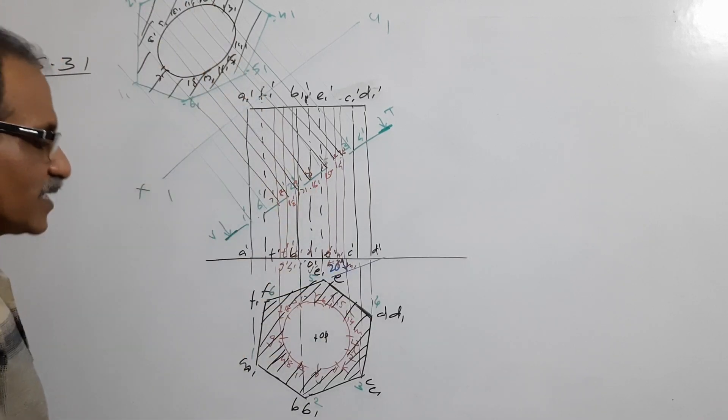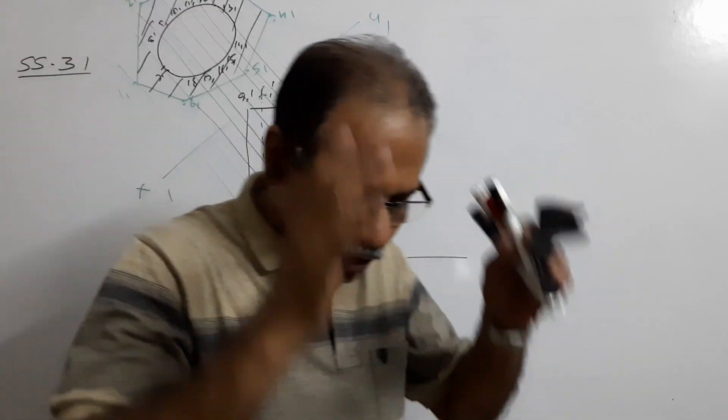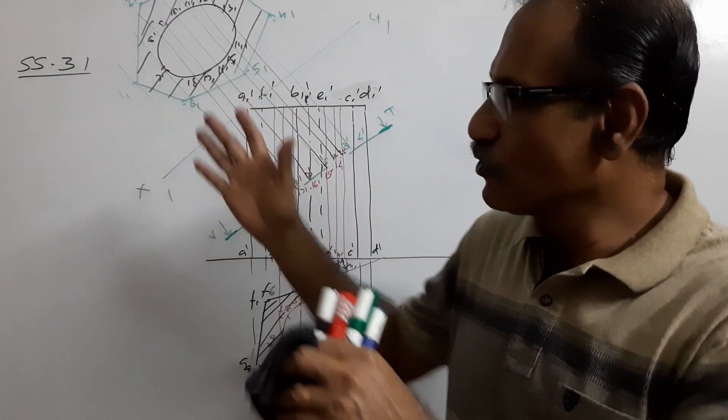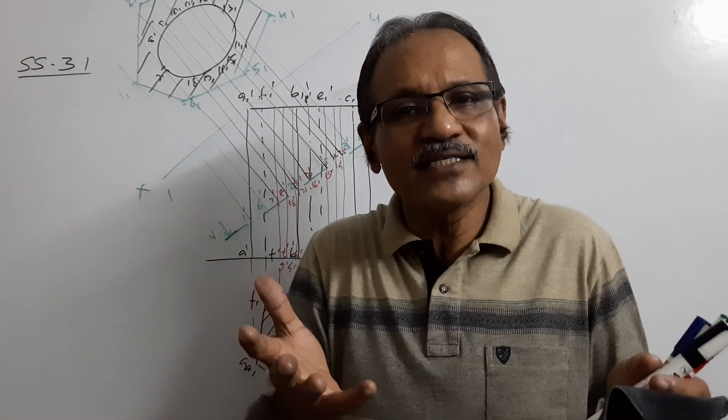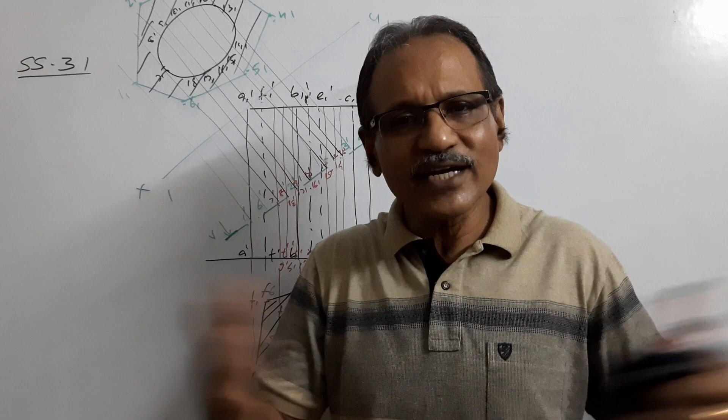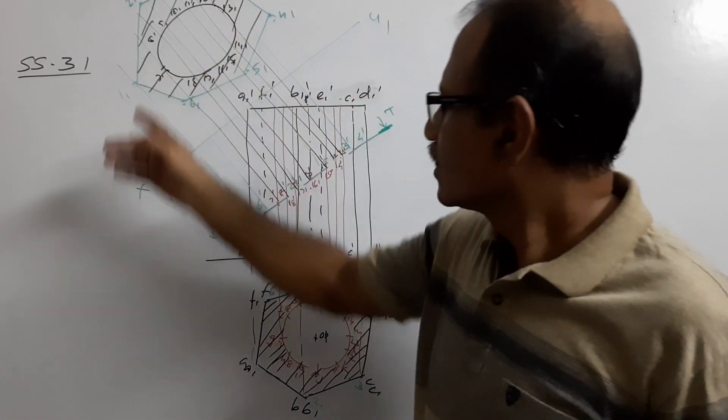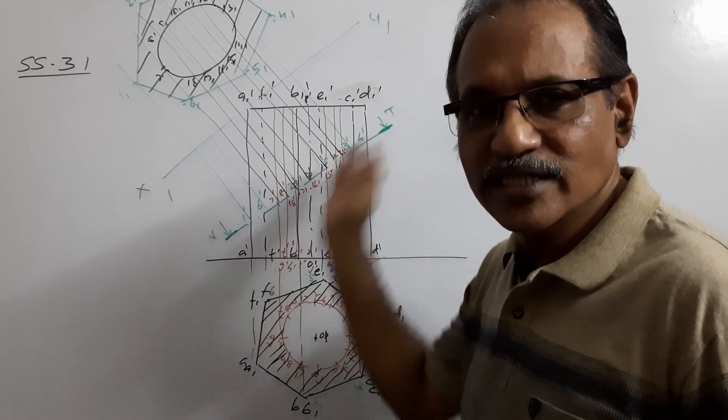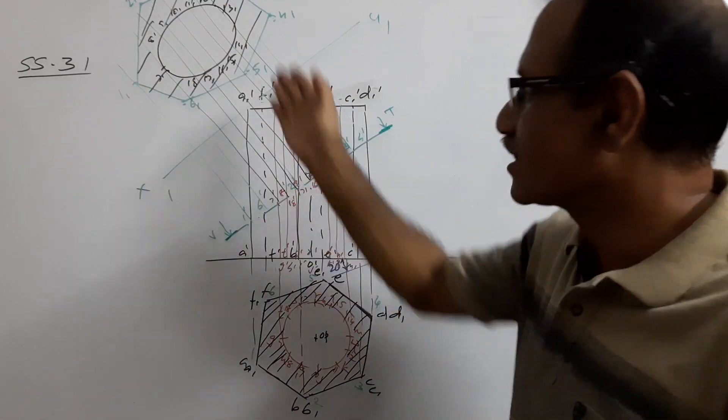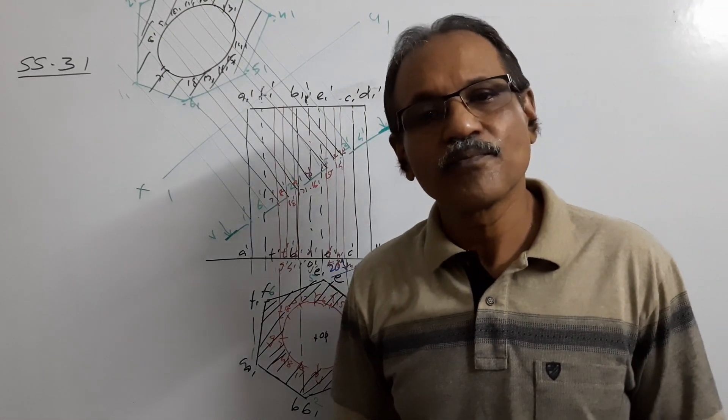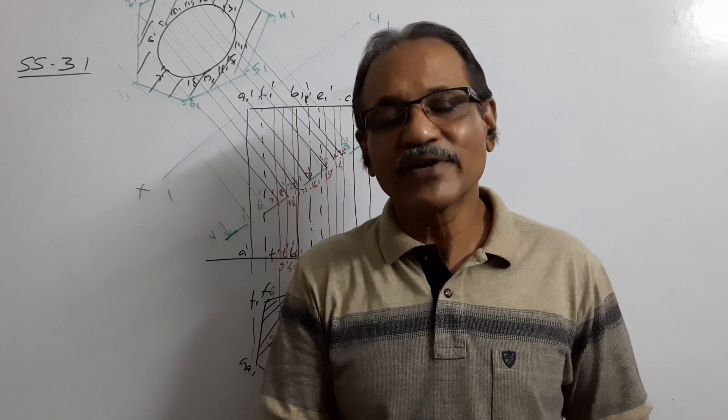You have got an ellipse because a cylinder is cut. What you do is first take the prism, cut it, and draw the views. Then draw the circle and think of a cylinder. Forget the prism, consider only the cylinder. Do what exactly we have learned when the cylinder is cut—you get an ellipse. Draw the ellipse, then you hatch the gap in the plan as well as in the true shape.